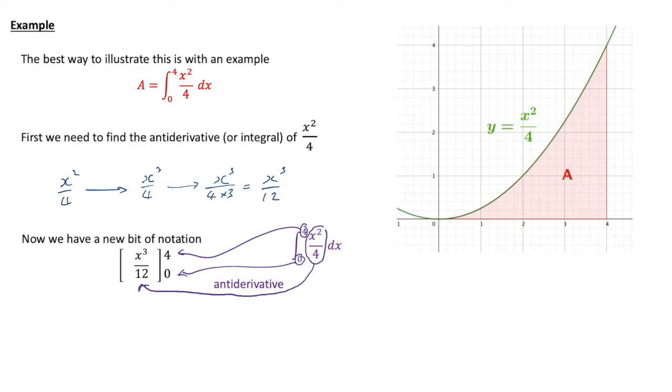So then what do we do with that? What we do is, we have the top number goes in to the function, and then we subtract with the bottom number going in.